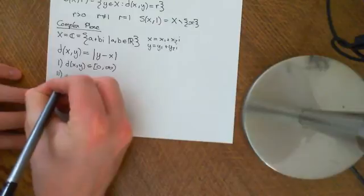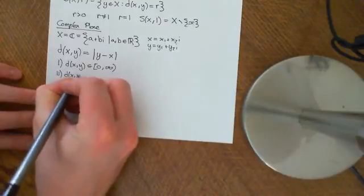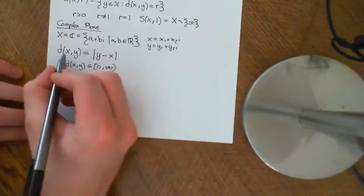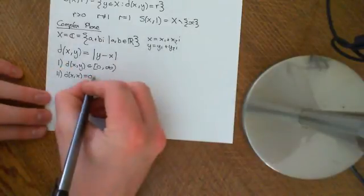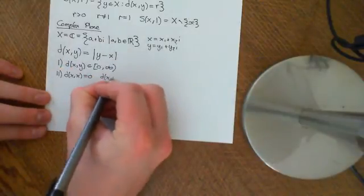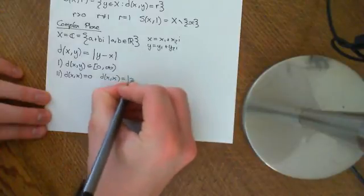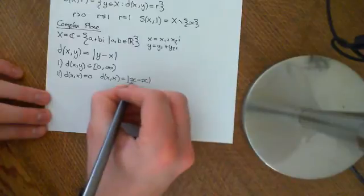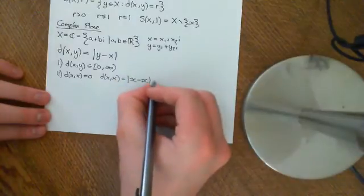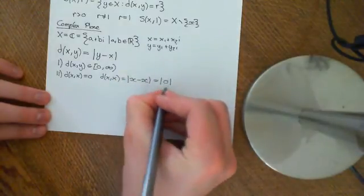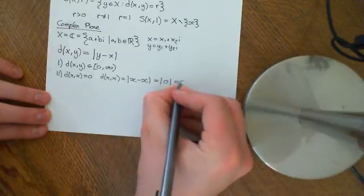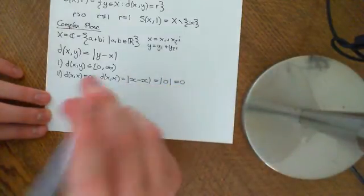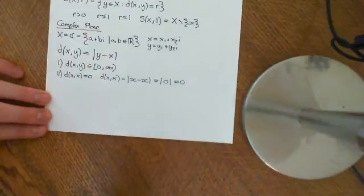Second, we want to make sure the distance between a point and itself is equal to zero. By definition, the distance between X and itself is the modulus of X minus X. Adding a complex number to its additive inverse gives the complex number zero, and the modulus of zero is defined to be zero.